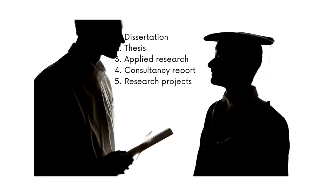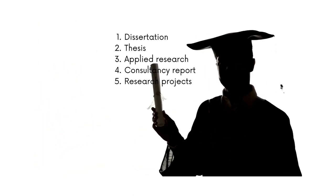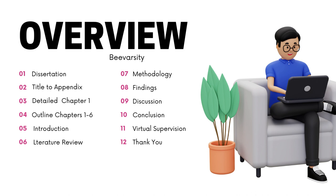If you want to graduate and you've got your final year project — the dissertation, the thesis, an applied research consultancy report or a research project — you're in the right place. Today we're going to cover everything from a title to the appendix, then detail how to write each chapter from one to six, including the introduction, literature review, methodology, findings, discussion, conclusion and recommendations. We'll also introduce our virtual supervision service if you need support.